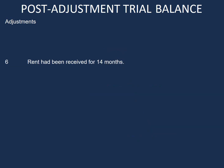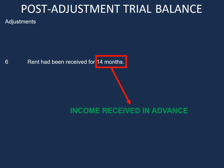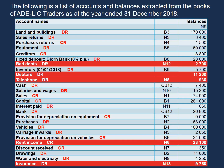Our next adjustment is rent has been received for 14 months. We have received rent for 14 months, so this is income received in advance. This is not in our list of accounts, so we will need to add that to our trial balance. The account we have in our list of balances is rent income, so we can go ahead and highlight that. Now when doing our adjustments, we know we need to do an adjustment for rent income.